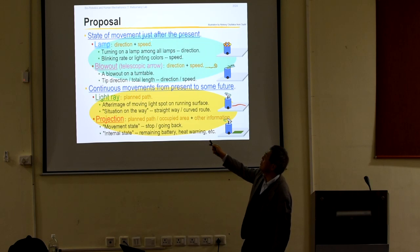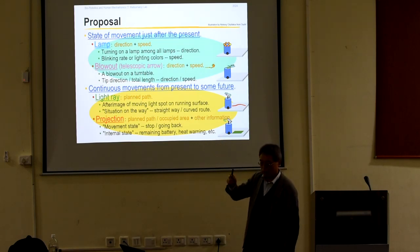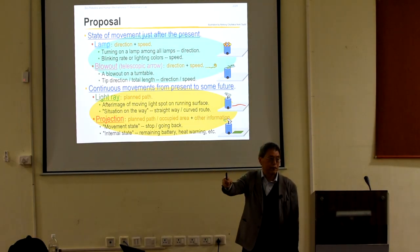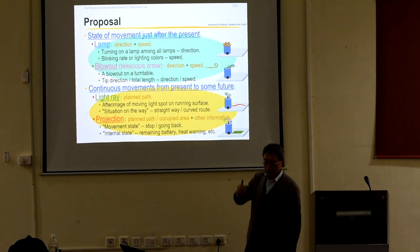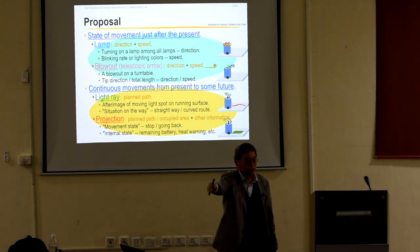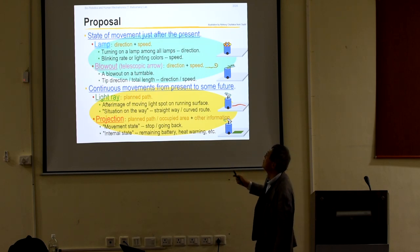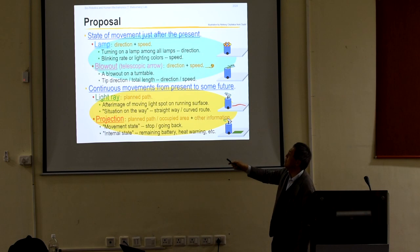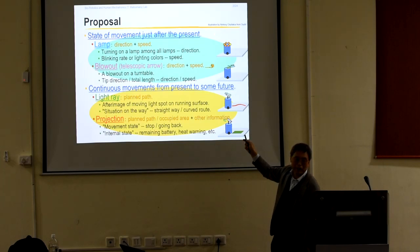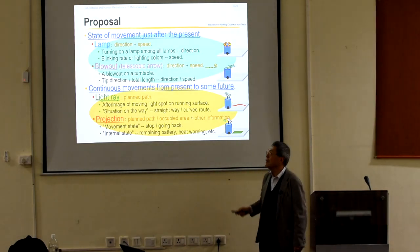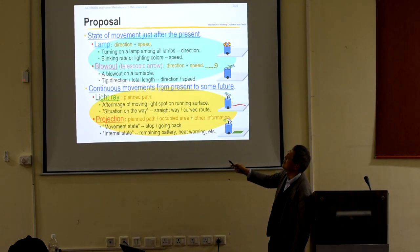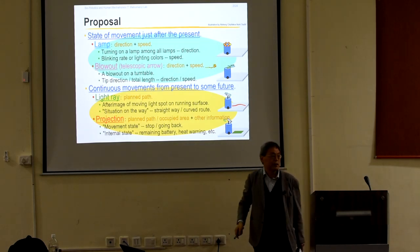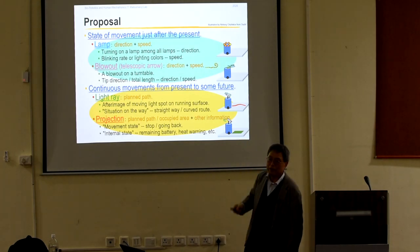We have proposed four methods categorized into two categories. The first is the state of movement just after the present — only the state of movement; one second later, it moves like this, is indicated. The second category is a continuous movement from the present to the future — from the present to one second later, two seconds later, or some other continuous uniform methods. For the first category, two types were initially considered. A lamp is put on top of the robot, and the lighting direction indicates the direction of movement. The speed is indicated by changing the blinking rate or lighting colors.